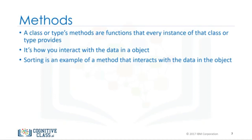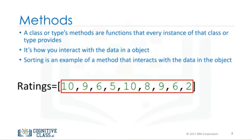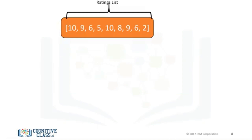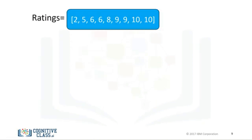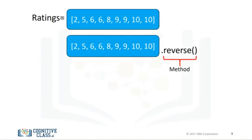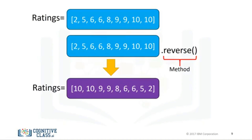We have the ratings list represented in orange. The data contained in the list is a sequence of numbers. We call the sort method. This changes the data contained in the object — you can say it changes the state of the object. We can call the reverse method on the list, changing the list again. We call the method reversing the order of the sequence within the object. In many cases, you don't have to know the inner workings of the class and its methods — you just have to know how to use them. Next, we will cover how to construct your own classes.